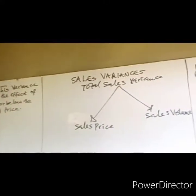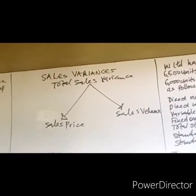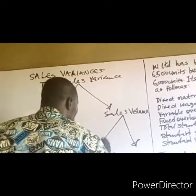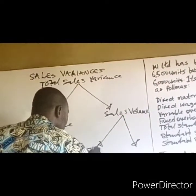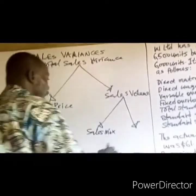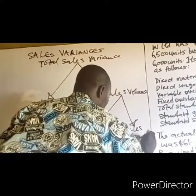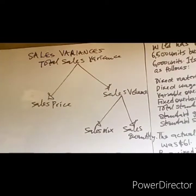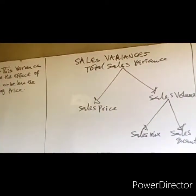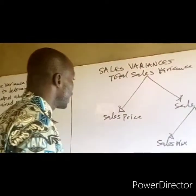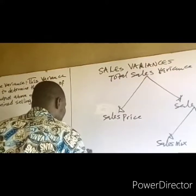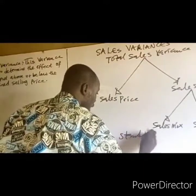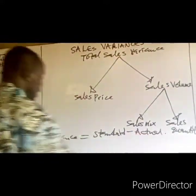The total sales variances shall be divided into sales price variance and sales volume variance. The sales volume variance can equally be divided into two: the sales mix variance and the sales quantity variance. Variance is calculated as the difference between standard and actual — standard minus actual.